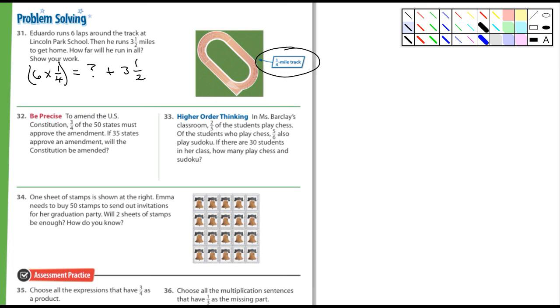To amend the U.S. Constitution, three-quarters of all fifty states must approve the amendment. If thirty-five states approve the amendment, will the Constitution be amended? So it has to be three-quarters. So you have to figure out, what is three-quarters of fifty? If that number is greater than thirty-five, then thirty-five states would not be enough. Because it has to be three-quarters. Or if it's thirty-five or above, then that would mean that thirty-five is at least three-quarters of fifty.